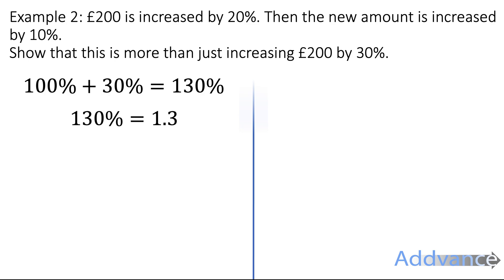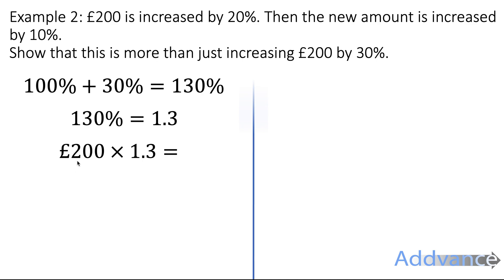Example two. £200 is increased by 20%, then the new amount is increased by 10%. Show that this is more than just increasing £200 by 30%. Let's start by working out what increasing £200 by 30% gives. 100% + 30% = 130%, and 130% as a decimal is 1.3. To increase £200 by 30% we do 200 × 1.3, which gives us £260.